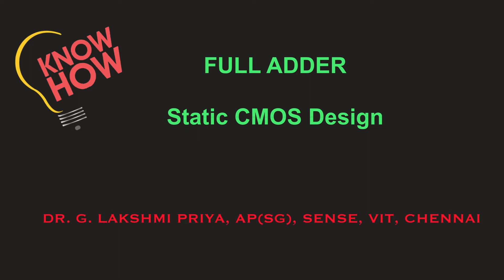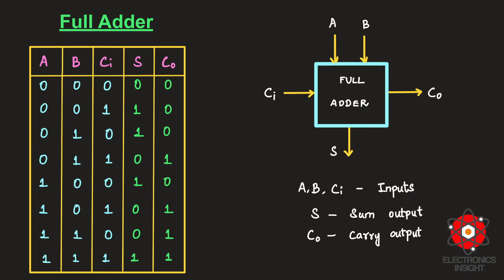Circuit optimization methods change the transistor sizes and topology to construct fast adders. Let us start a discussion with the basic full adder, which considers a, b, and ci (carry input) as inputs. The outputs of this full adder are the sum and the carry output.